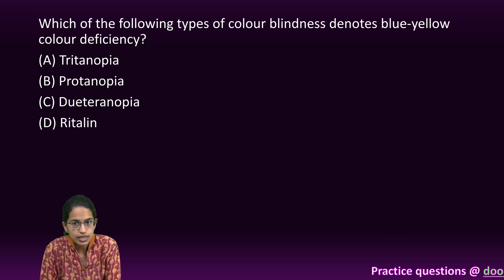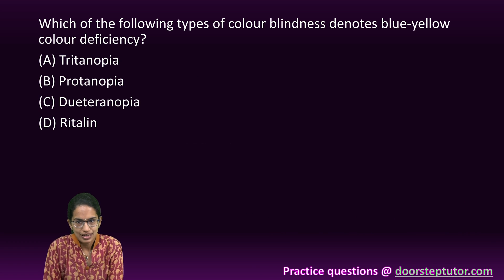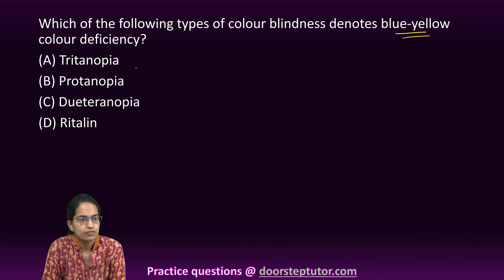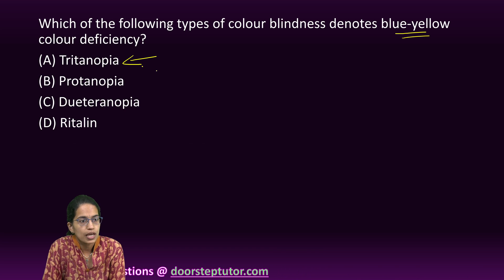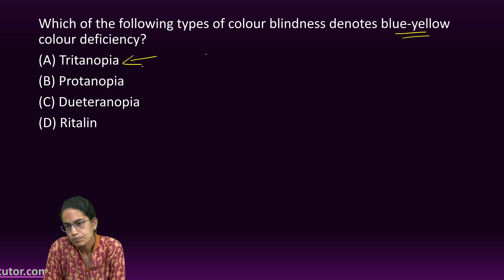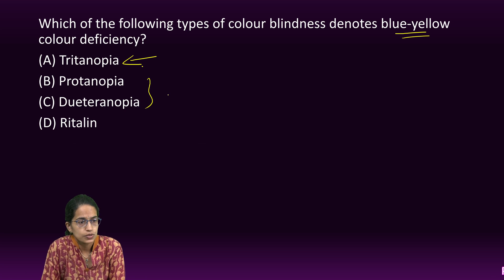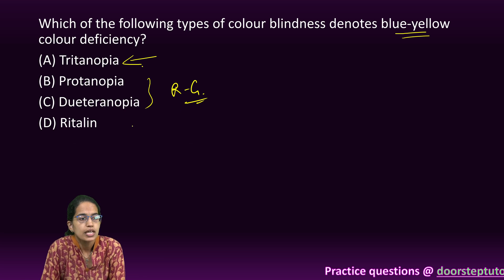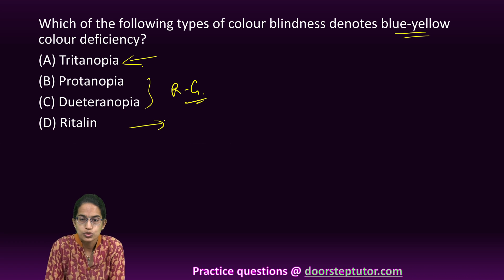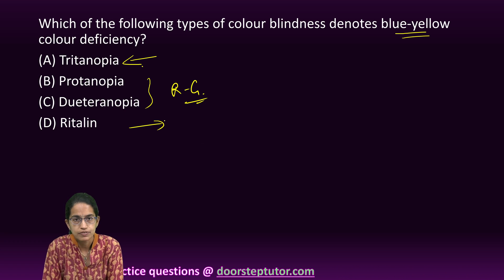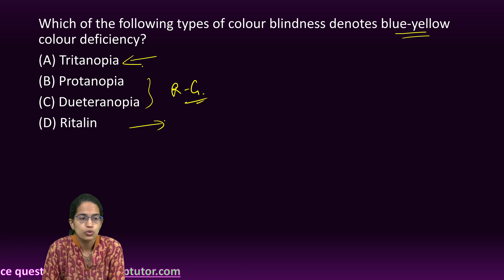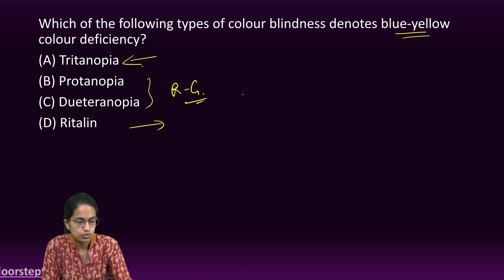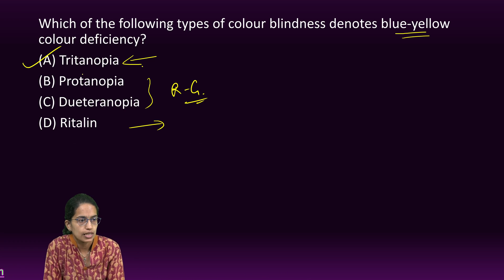Blue-yellow color deficiency is known as tritanopia. Tritanopia denotes blue-yellow, blue-green, purple-red, and pink-yellow color deficiency. Protanopia and deuteranopia denote red-green color deficiency. Ritalin is a drug used to treat attention deficit hyperactivity disorder or narcolepsy. So the correct answer here is tritanopia.